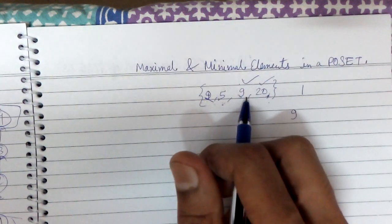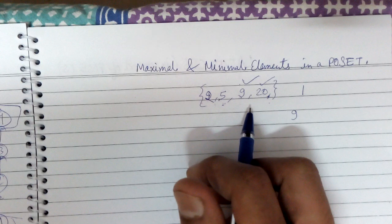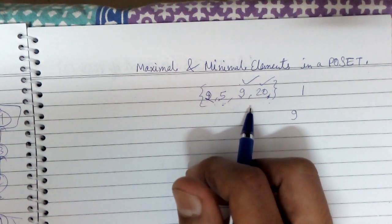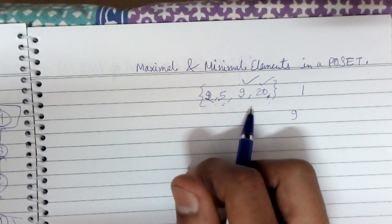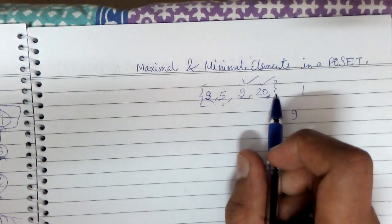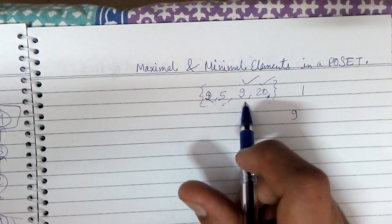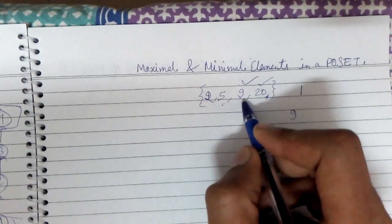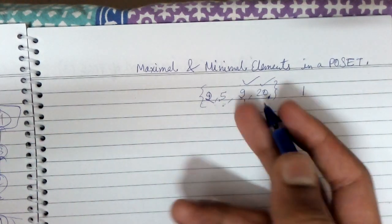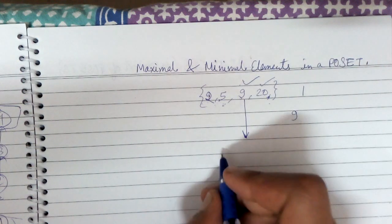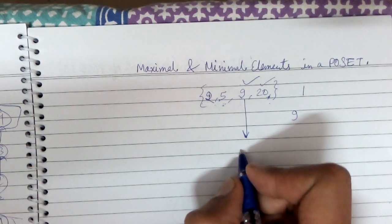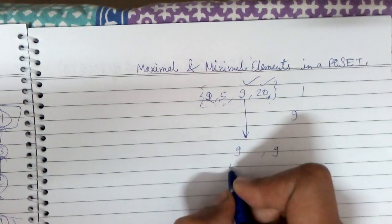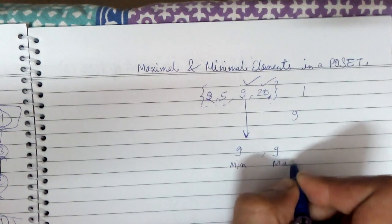So 9 is a maximal element by default. There is no one below 9 and no one above 9, so 9 is both maximal and minimal. We consider 9 as both min and max.